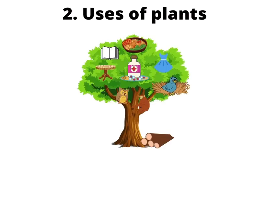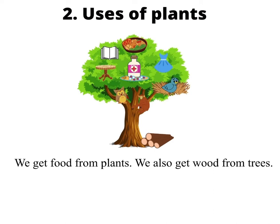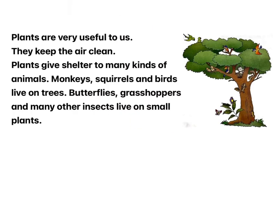Chapter 2: Uses of Plants. Roots, stem, leaves, flowers and fruits are the main parts of a plant. We get food from plants. We also get wood from trees. Plants are very useful to us — they keep the air clean.